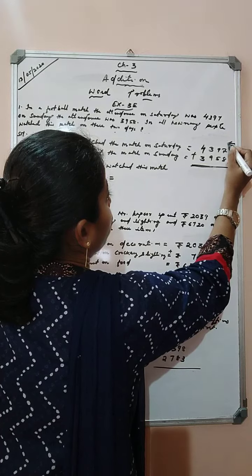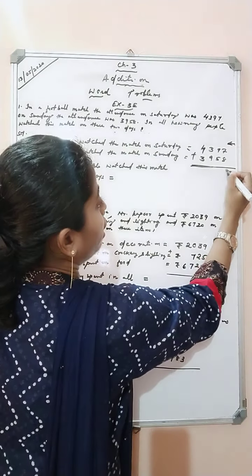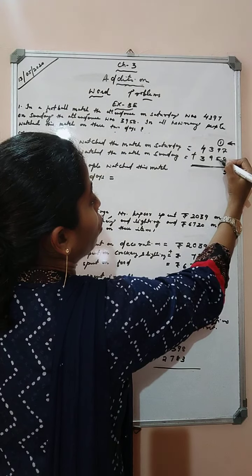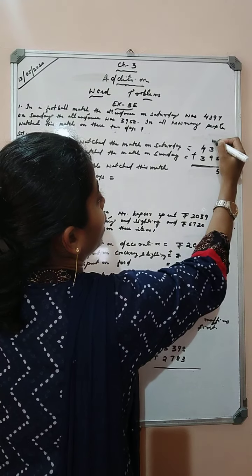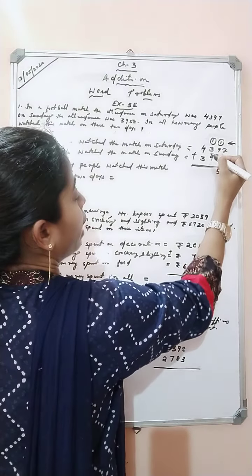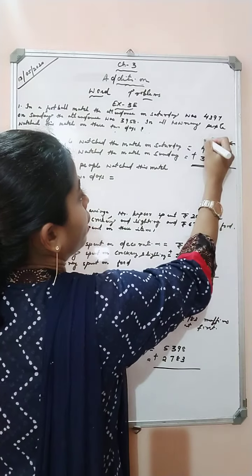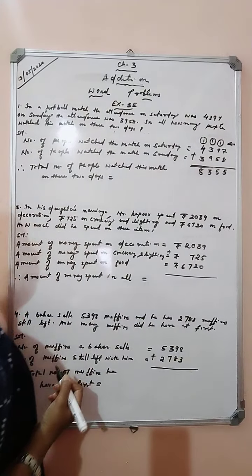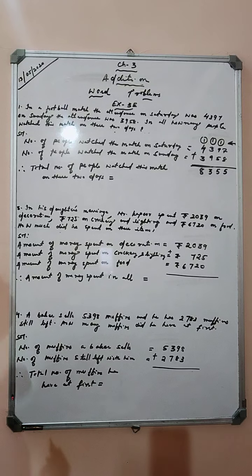We will start our addition from the right side. 7 plus 8 is 15 — write 5, carry 1. 9 plus 5 is 14, plus 1 is 15 — write 5, carry 1. 3 plus 9 is 12, plus 1 is 13 — write 3, carry 1. 4 plus 3 is 7, plus 1 is 8. So, 8,355 people watched the football match on these two days.